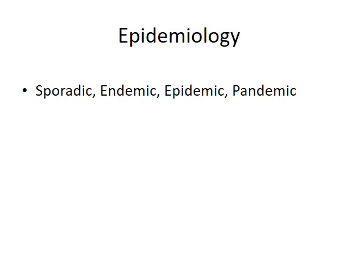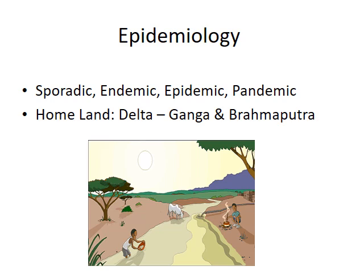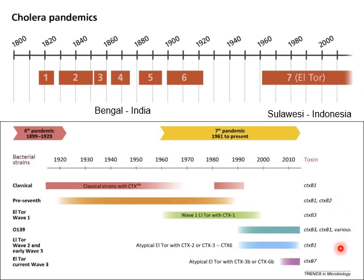Epidemiology: cholera is a sporadic, endemic, epidemic, and pandemic disease. The homeland of cholera is the Delta region of the Ganga and Brahmaputra rivers — that is, India and Bangladesh. Cholera has caused 7 pandemics in history; the first 6 originated from Bengal, India, while the 7th pandemic originated from Sulawesi, Indonesia. The world has so far suffered from 7 pandemics.